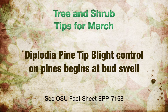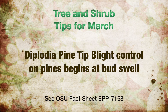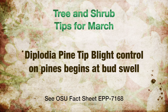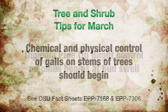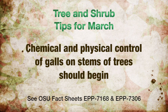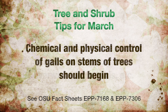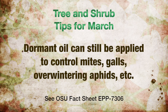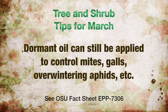Diplodia pine tip blight control on pines begins at bud swell — be ready to spray that as well. Chemical and physical controls of galls, or the swellings on stems of trees, should begin now as well. Dormant oil can still be applied to control mites, galls, overwintering aphids, etc.